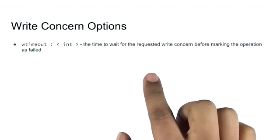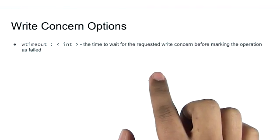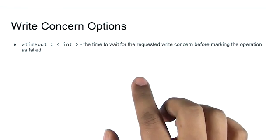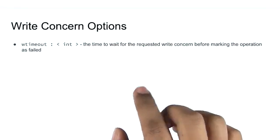An important note here. Hitting a W timeout error does not mean that the write operation itself has failed. It only means that the application did not get the level of durability that it requested.